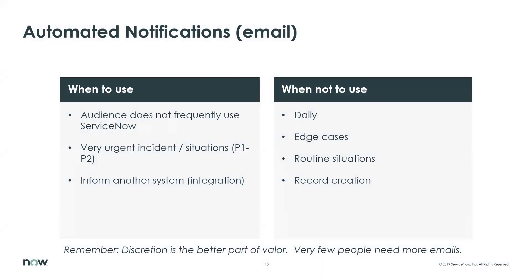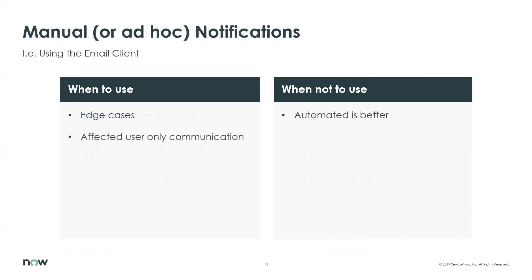When we talk about security operations notifications, we want to discuss the different types and when to use — and when not to use — them. First off, when most people think notifications, they're thinking email. You want to use these when people aren't already going to be in the platform and you need to tell them about something going on that's incredibly important. You don't want to use them for run-of-the-mill stuff. You don't want to get three, four, five different emails every single day, and you don't want to build a ton of email notifications for the 5% of something that's going to happen once or twice a year. Remember, discretion is the better part of valor when it comes to emails — very few people will really need more emails in their day-to-day work.